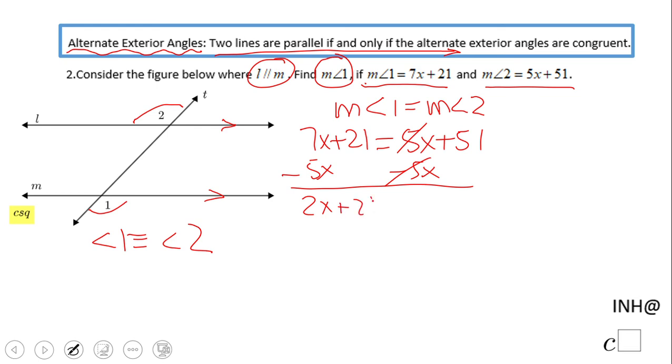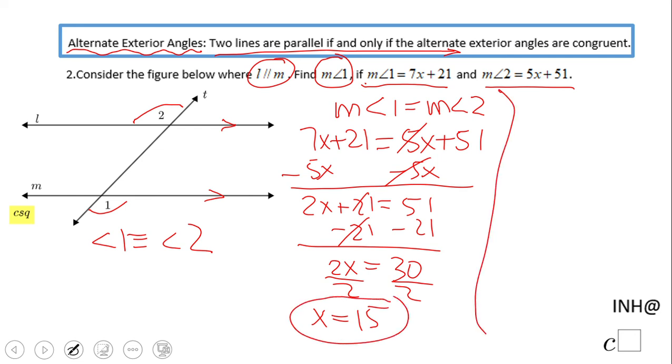And we have 2x plus 21 equals 51. Subtract 21: 2x equals 30. Divided by 2: x equals 15. Now we have to do the last thing,